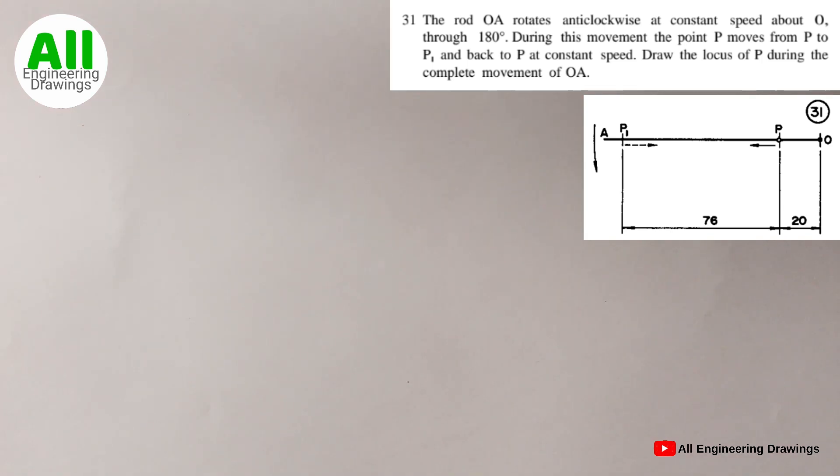The question says, the rod AO rotates anticlockwise at constant speed about O through 180 degrees. During this movement, the point P moves from P to P1 and back to P at constant speed. Draw the locus of P during the complete movement of OA.